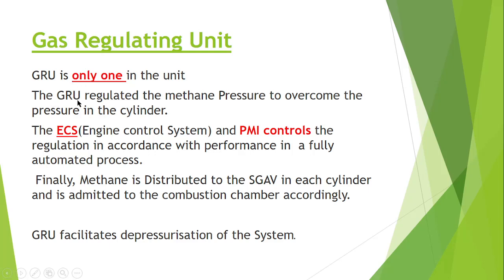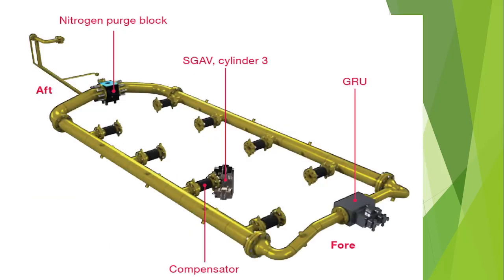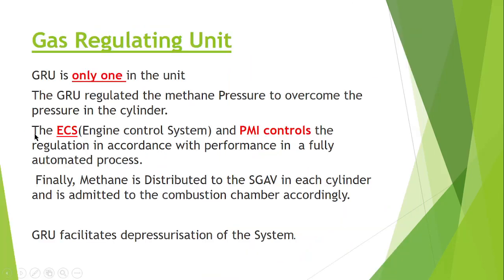The GRU regulates the methane pressure to overcome the pressure in the cylinder. So the purpose of the GRU is to regulate the methane pressure to overcome the pressure in the cylinder. It will monitor and allow and regulate that pressure accordingly. The Engine Control System and the PMI control regulation work in accordance with performance in a fully automated process.